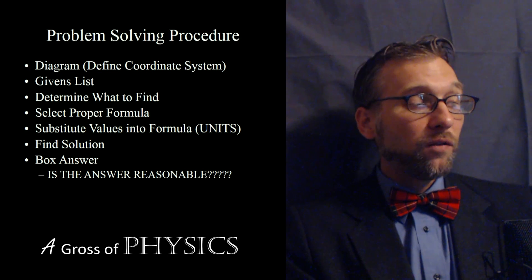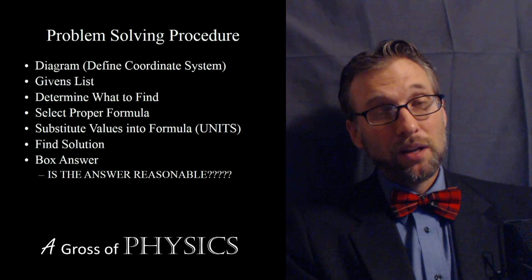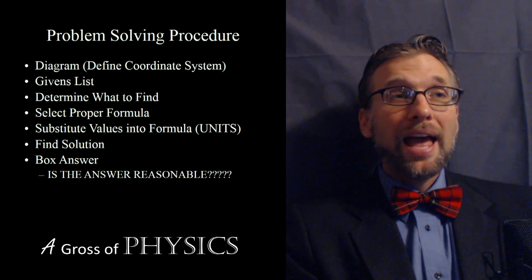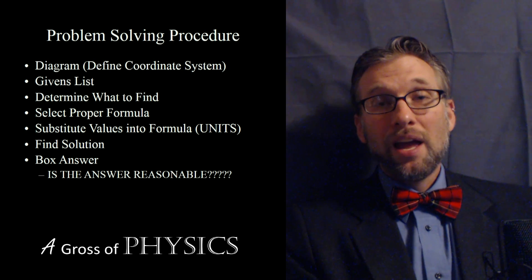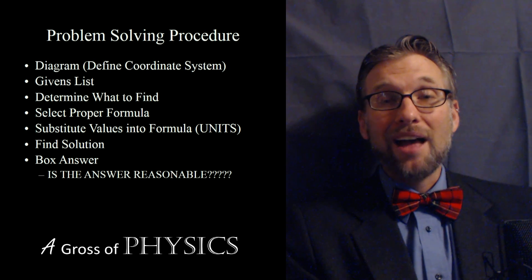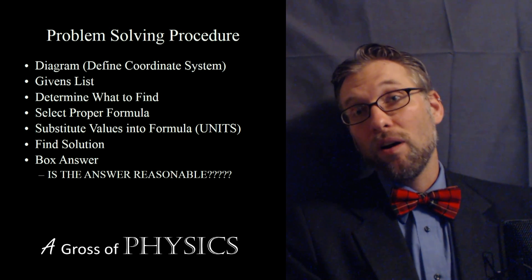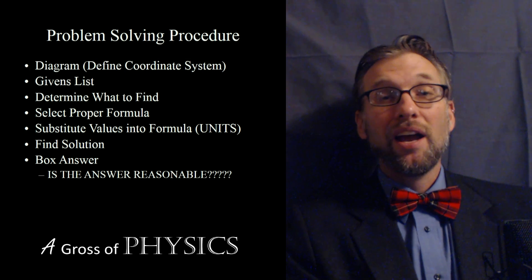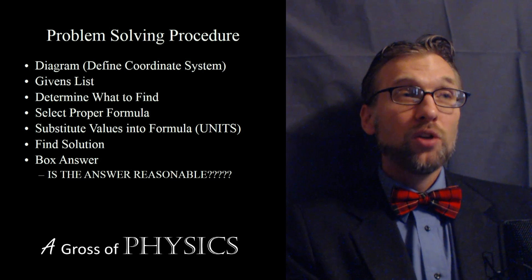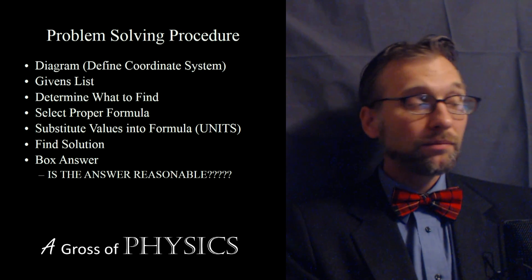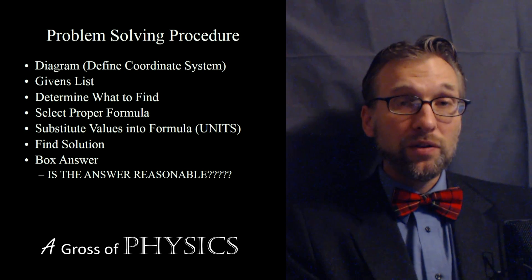Once you're done with that, you're going to look for the proper equation. At this point, we have equation one, two, three, four, and five, and you'll choose which equation has all of the variables that you have and are looking for. You're looking for the equation that has the three variables you already have and the one you're going to try to find.